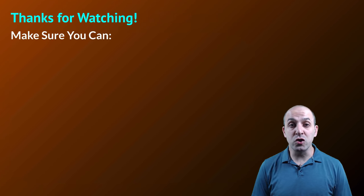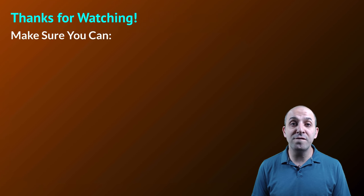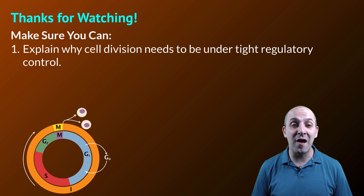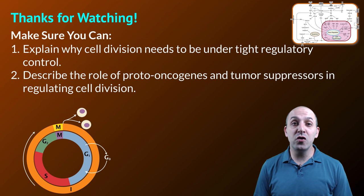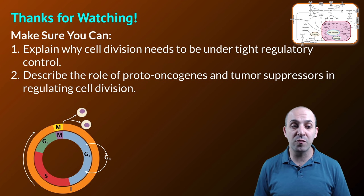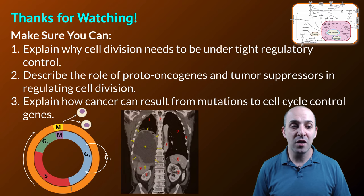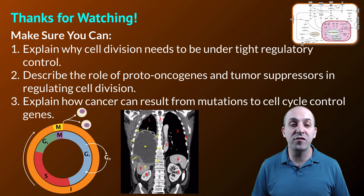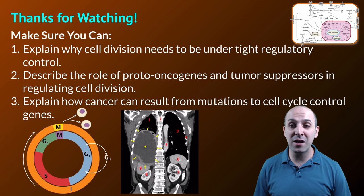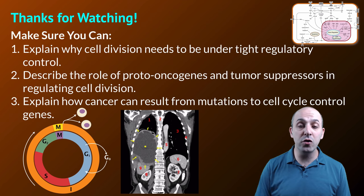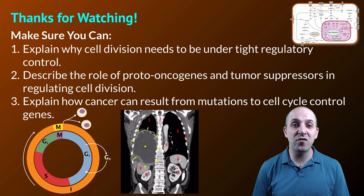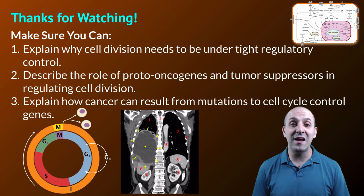Thanks so much for watching this video on the control of cell division. Make sure you can do the following things here at the end. Make sure that you can explain why cell division needs to be under tight regulatory control. Make sure that you can describe the role of proto-oncogenes and tumor suppressors in regulating cell division. And finally make sure that you can explain how cancer can result from mutations to the cell cycle control genes and how we can use that information in order to target therapies for different types of cancers. If you can do those things you're doing great. If not that's okay too. Take a moment and write down any questions that you have here at the end so that you can get the answers that you need.